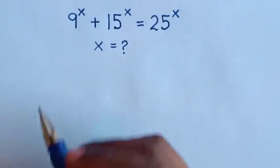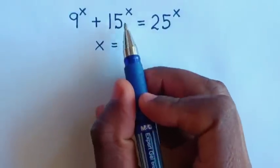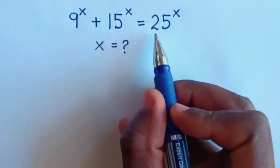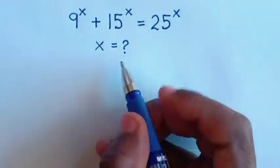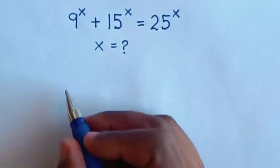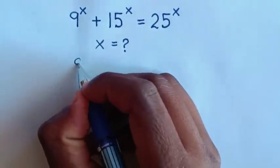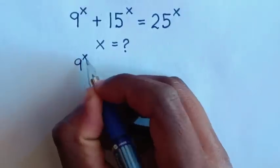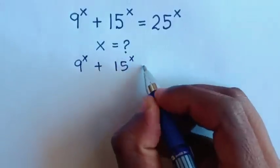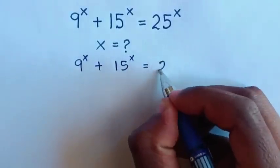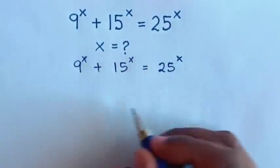Hello. How to solve 9 power x plus 15 power x is equal to 25 power x, to find the value of x. So from this equation, 9 power x plus 15 power x is equal to 25 power x.